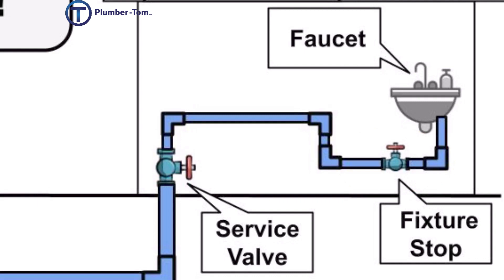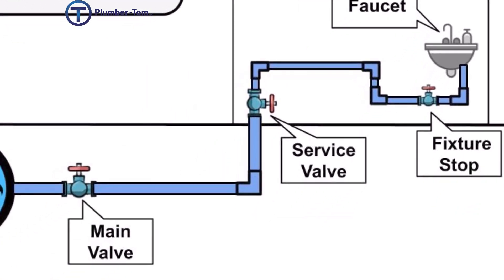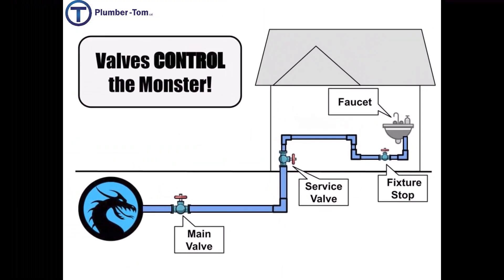But if the fixture stop fails, or if any of the pipes in the house fail, there is also a service valve in the house to turn off the water to the house. And if the service valve fails, then there is also a main valve out at the street where it connects to the pressurized water from the city — where you have yet another control. So you see there is a great amount of redundancy — repeated valve controls to protect us against the monster getting free.